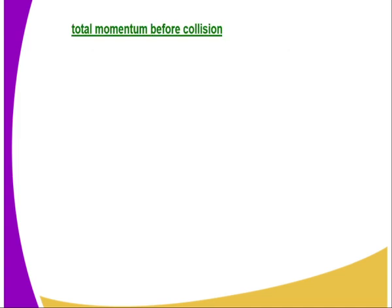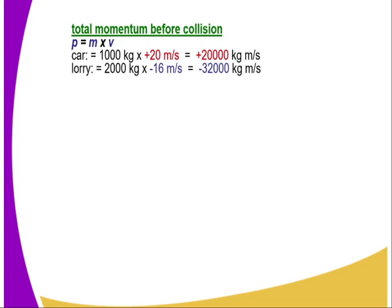Let's get to finding the solution. Total momentum before the collision given by p = m × v. Therefore, the car whose mass is 1,000 kg multiplied by its velocity gives us 20,000 kg m per second.